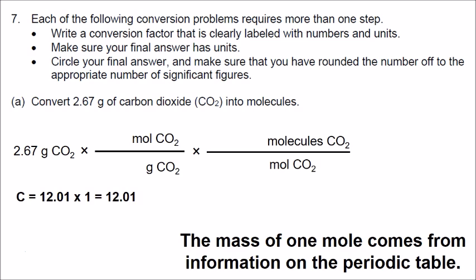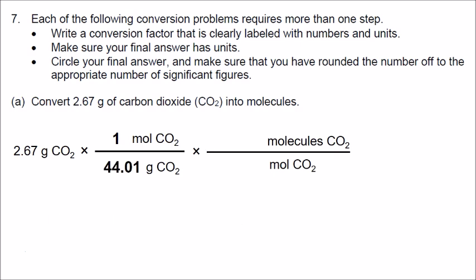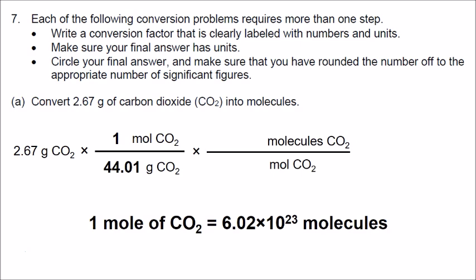Now let's talk about the numbers. The mass of 1 mole comes from the periodic table. Carbon dioxide has 1 carbon with a mass of 12.01, and 2 oxygens — that's 16 times 2, so 32. The total is 44.01, meaning 1 mole of carbon dioxide has a mass of 44.01 grams. We put a 1 on the top next to moles and 44.01 on the bottom next to grams. In the second step, we put a 1 on the bottom next to moles and Avogadro's number on the top next to molecules.